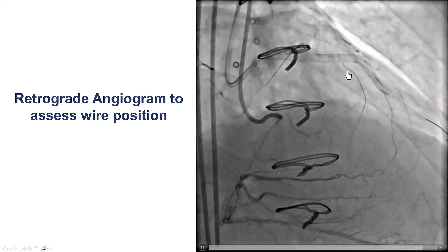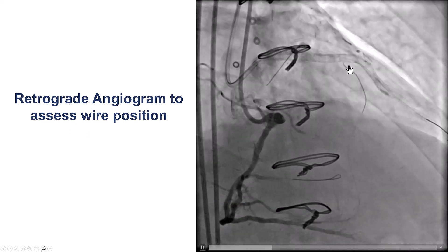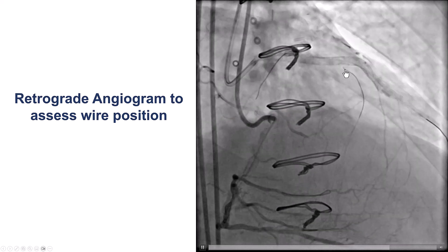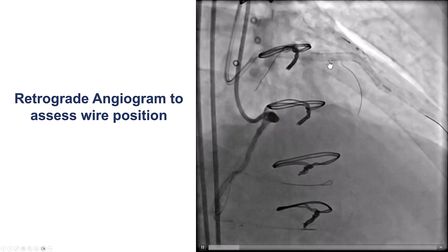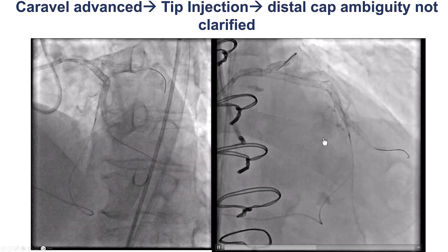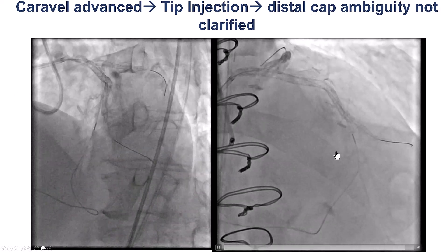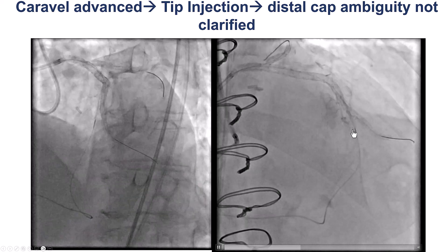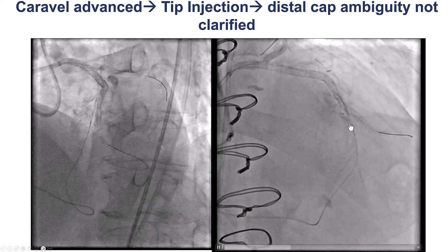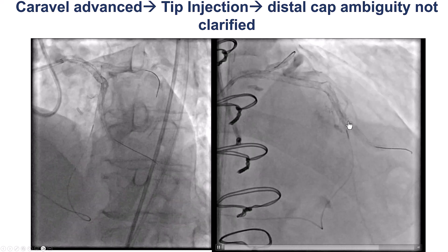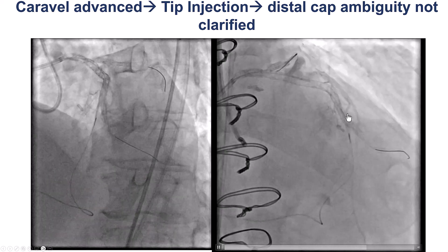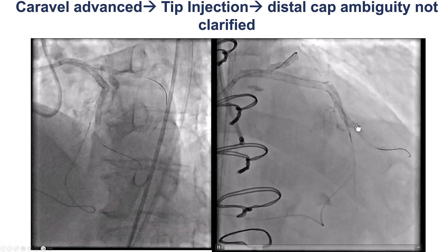Although this should help us clarify the location of the proximal cap, we were still unclear as to where the mid-LAD attaches to the proximal segment that has been stented. Here is an injection through the microcatheter advanced all the way to the mid-LAD. We can see where the entry point into the CTO is most likely to be, right at the bend going into the diagonal branch.